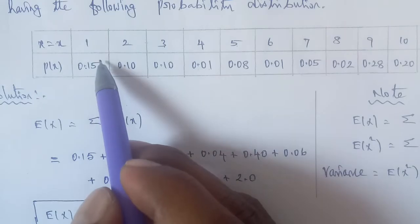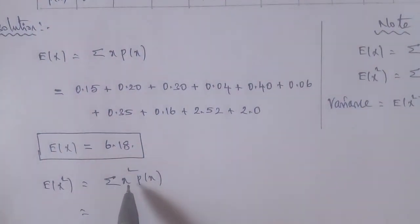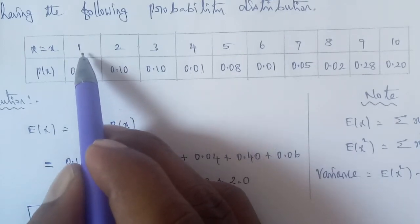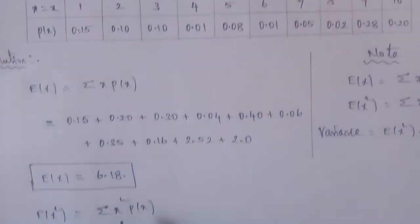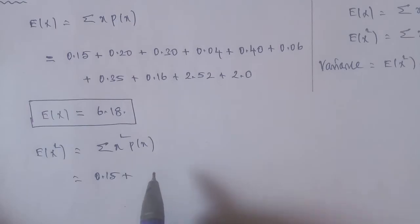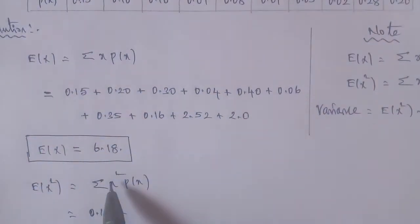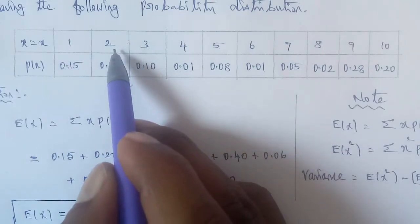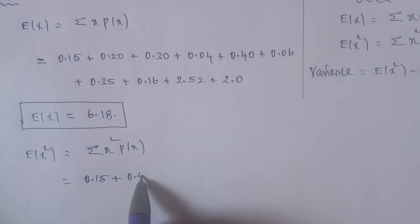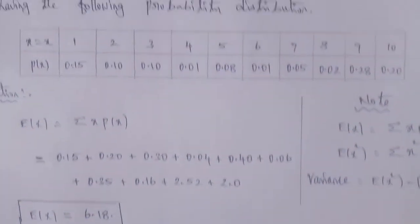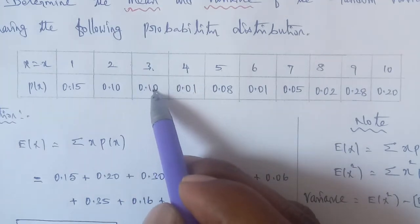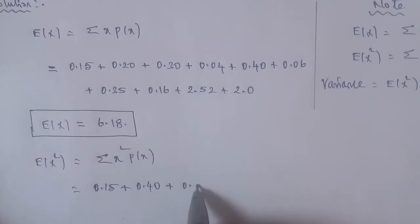Now computing E(x²) = Σ x²·p(x). For x = 1: 1² = 1, 1 × 0.15 = 0.15. For x = 2: 2² = 4, 4 × 0.10 = 0.40. For x = 3: 3² = 9, 9 × 0.10 = 0.90.